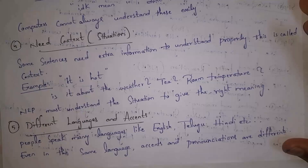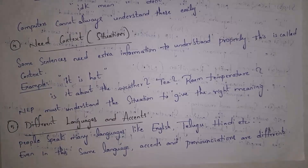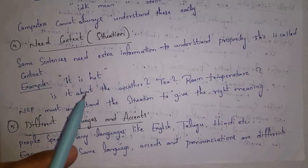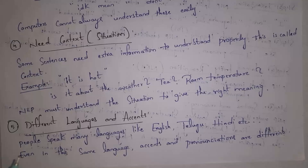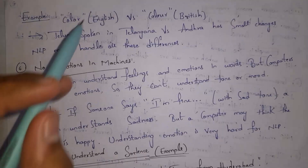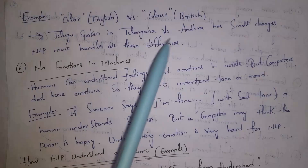The fourth challenge is needing context, that is the situation. Some sentences need extra information for the computer to understand the full meaning. For example, 'it is hot' — the computer won't know if coffee is hot, the weather is hot, or the room is hot. Without context, the computer must determine the situation to give the right meaning. The fifth challenge is different languages and accents. People speak different languages like Telugu, Hindi, English, etc., and in each language grammar rules and pronunciations differ. For example, in American English 'color' is spelled C-O-L-O-R, while in British English it is spelled C-O-L-O-U-R, and the computer needs to understand both. The sixth challenge is no emotions in machines — computers have no emotions or feelings. If I am very sad and crying but say 'I am fine' in a sad tone, the computer will think I am genuinely fine and happy.